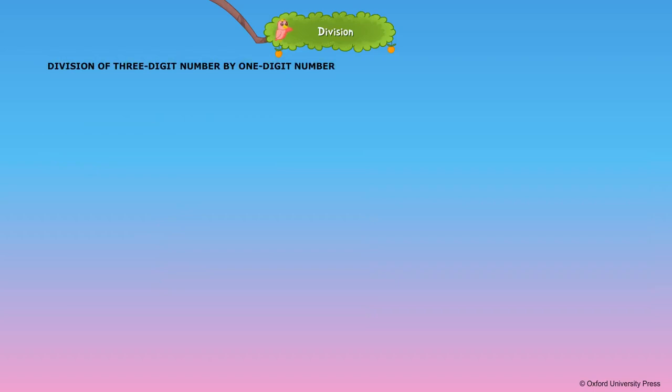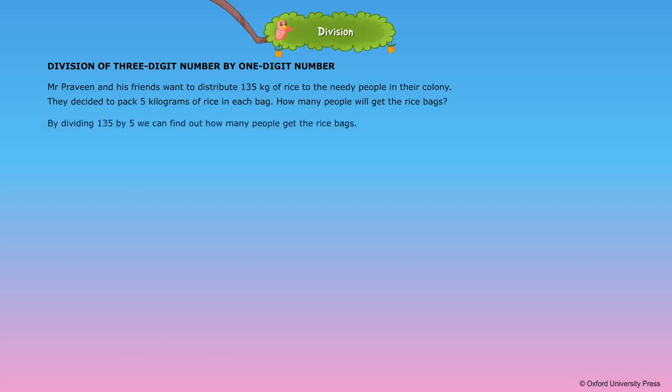Division of three-digit number by one-digit number. Mr. Praveen and his friends want to distribute 135 kilograms of rice to the needy people in their colony. They decided to pack 5 kilograms of rice in each bag. How many people will get the rice bags? By dividing 135 by 5, we can find out how many people get the rice bags.